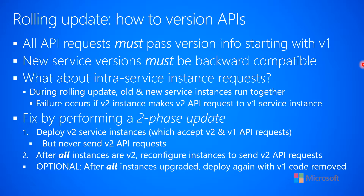We fix this by performing what's called a two-phase update. Here's how the two phases work. First, you deploy your version 2 service instances into the cluster. Because backward compatibility must always be maintained, your version 2 instances must be able to accept and respond to version 1 API requests. But your version 2 instances will never send a version 2 API request — they will accept v1 and respond v1, but they will never send out a v2. Therefore, there would never be a reason to respond to a v2.